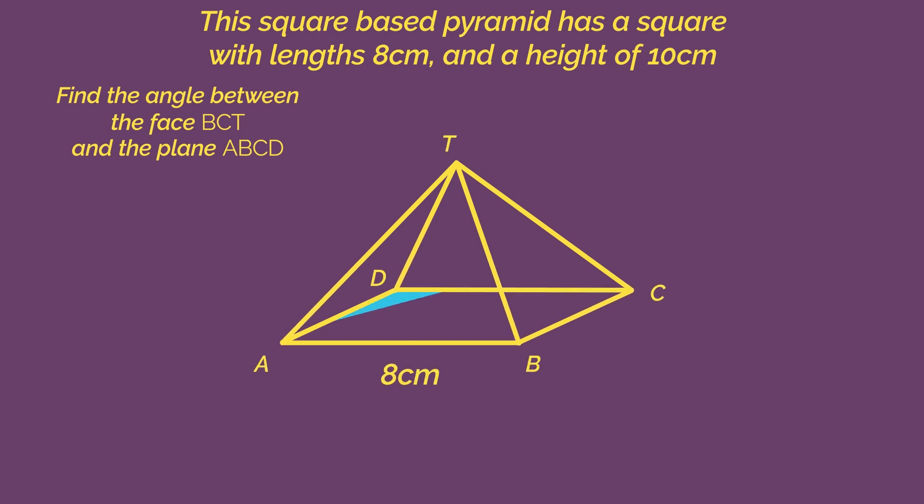As always, start by looking for right-angle triangles. Right angles are only found between vertical and horizontal lines. So we need to drop a vertical from T down to the centre of the horizontal base.